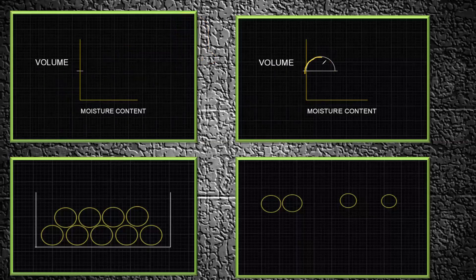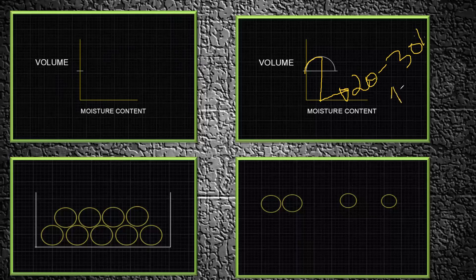This particular point is called maximum bulking. It has been found that the volume of sand is going to increase by around 20 to 30 percent when the moisture content is somewhere close to 4 to 5 percent. So when there is 5 percent moisture content in your sand, the volume of your sand is going to increase by 20 to 30 percent.